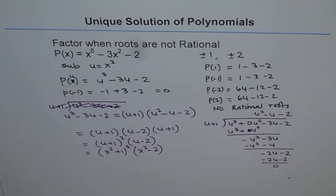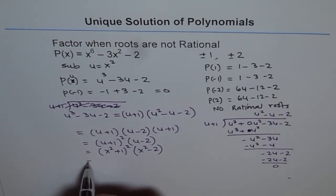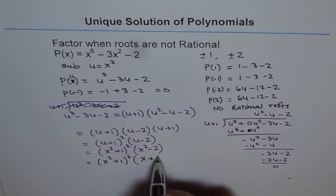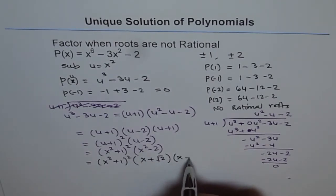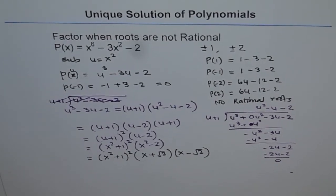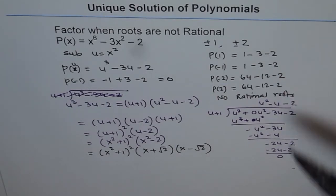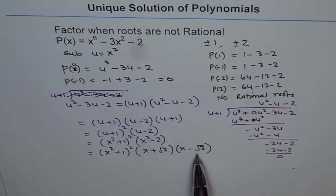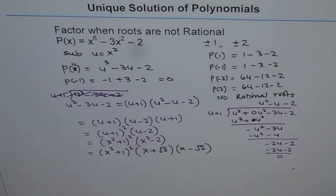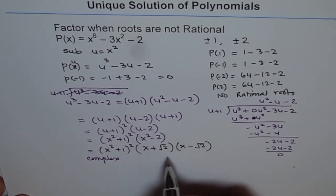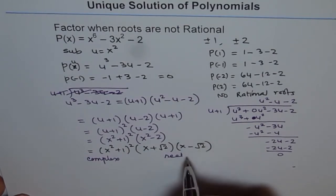Writing the final factored form: (x squared + 1) squared times (x squared minus 2), and x squared minus 2 can be written as (x + √2)(x − √2). So the roots are plus and minus √2 as real roots, and complex roots from the (x squared + 1) squared factor. We have a combination of real and complex roots.